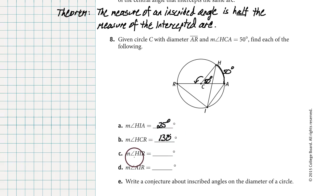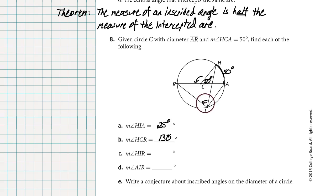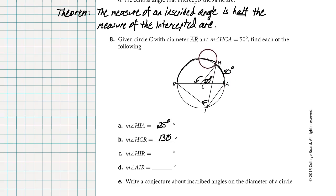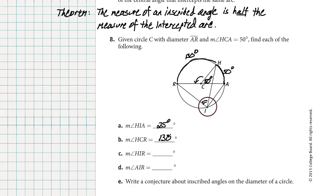Question C: what's the measure of angle HIR? We're looking at H to I to R — this is an inscribed angle. It's going to be half of its intercepted arc. The arc from A wrapping all the way to R is 180 degrees. From A to H is 50 degrees, so the arc from H to R is 130 degrees. Our angle HIR is half of 130, which is 65 degrees.